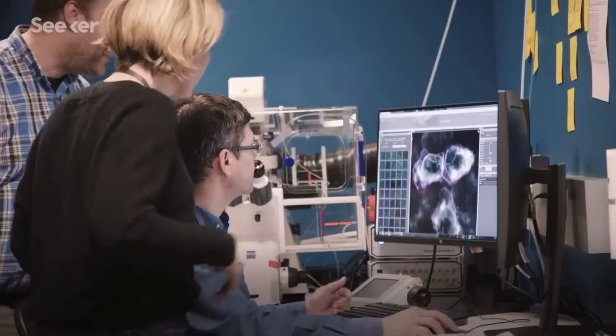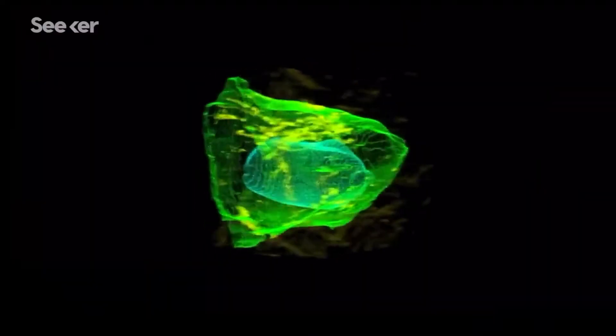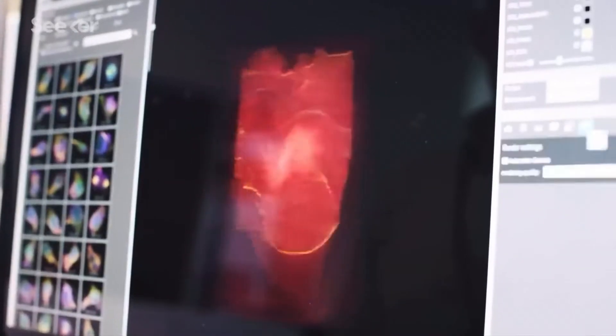At research organizations like the Allen Institute for Cell Science, biologists are taking a more integrated view to better understand this complexity. We're trying to think of all the structures of the cells in a holistic manner.